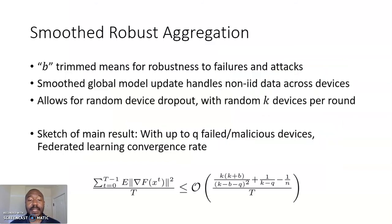We show that combining trim mean with some smoothing results in a robust strategy. With up to Q failed and malicious workers out of K random active devices in every round, the convergence takes a hit in terms of number of failed devices, yet improves with the number of participating devices and trim models. Once again, ideally, the amount of trimming is balanced by the expected or anticipated tolerance for failures.